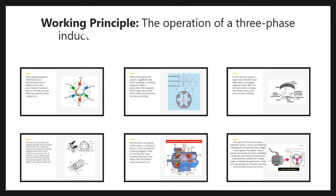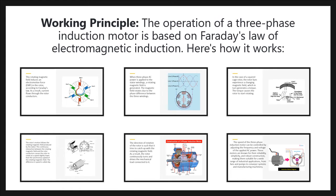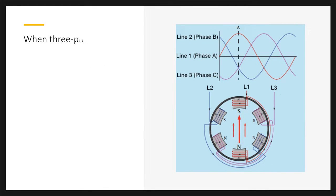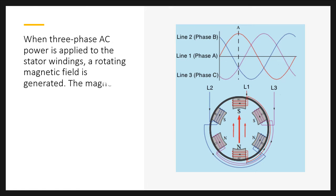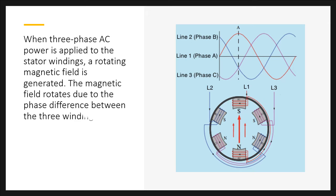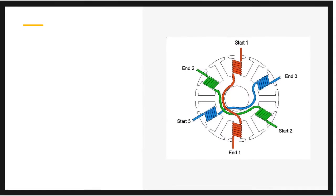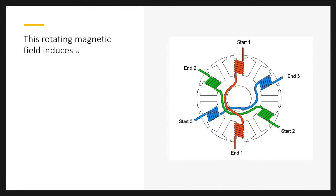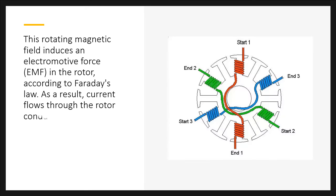The operation of a three-phase induction motor is based on Faraday's law of electromagnetic induction. Here is how it works: When three-phase AC power is applied to the stator windings, a rotating magnetic field is generated. The magnetic field rotates due to the phase difference between the three windings. This rotating magnetic field induces an electromotive force (EMF) in the rotor, according to Faraday's law.